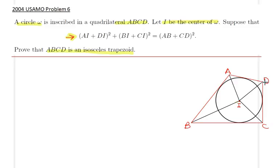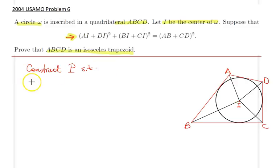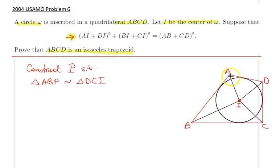This problem was posed on HMMT as well a few years ago. The crux move is to construct a point P outside the quadrilateral such that triangle ABP is similar to triangle DCI. Before starting the construction, let's establish a good understanding of the picture. I is the center of the circle, so we have equal angles — let's call them alpha, beta, gamma, and theta respectively.